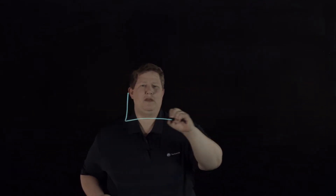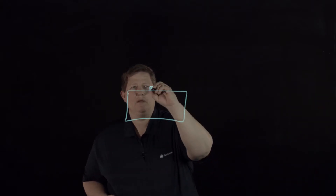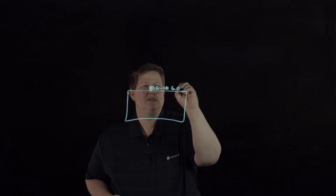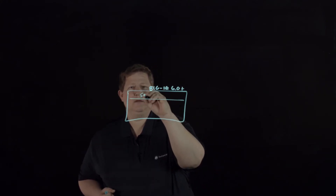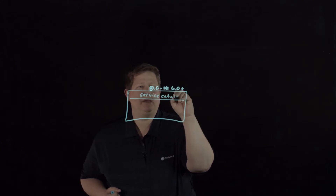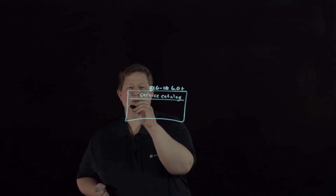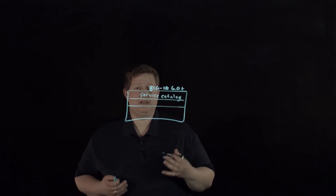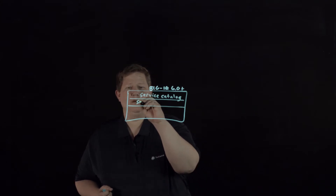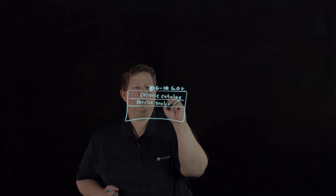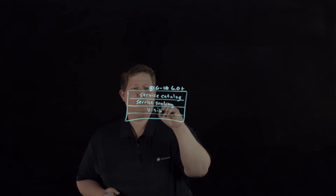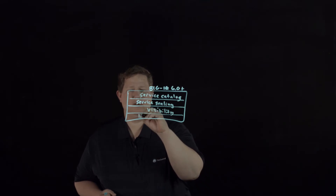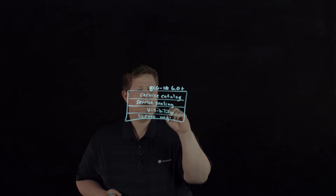Let's talk about BigIQ to start with - we'll put that right here in the middle. So we have BigIQ 6.0 and up. Within BigIQ for the Cloud, we have our service catalog. This is where your application templates would be defined, your device templates, your application templates, and your service scaling policies. You also have all your visibility and reporting and, of course, your license management.